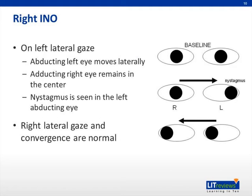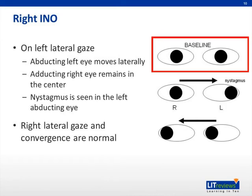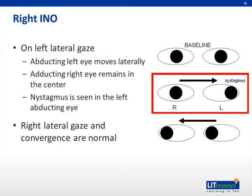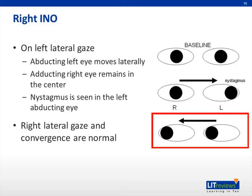The clinical picture in right INO is as follows. In primary position, the eyes remain centered. On left conjugate gaze, the right eye has limitation of adduction and remains central, while the left eye moves laterally with associated nystagmus. The right medial rectus is intact, and this can be demonstrated on convergence, which should remain normal. All other eye movements are normal.